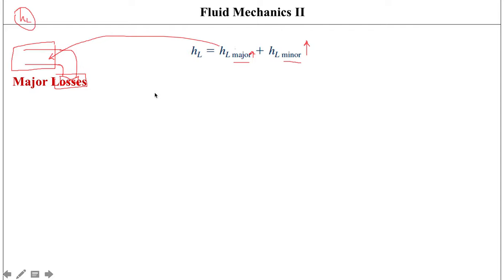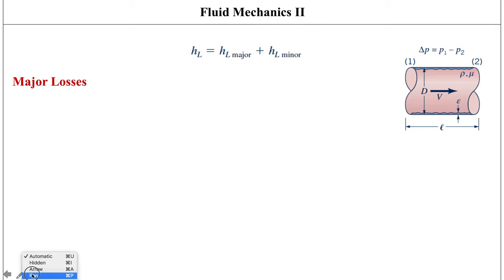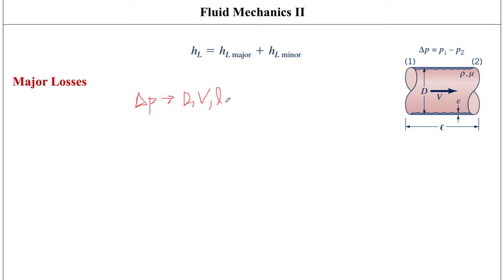For now we're going to look at the major losses. For a pipe flow, if we wanted to express pressure drop, we previously expressed it in terms of diameter, average velocity, length, and fluid density for fully developed laminar flow. For fully developed turbulent flow, density becomes important too, and another critical variable is epsilon, which gives a measure of the roughness of the pipe wall.